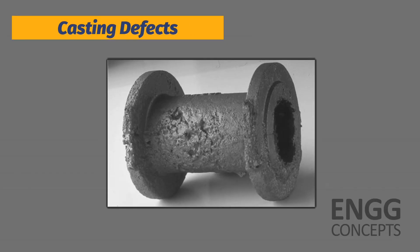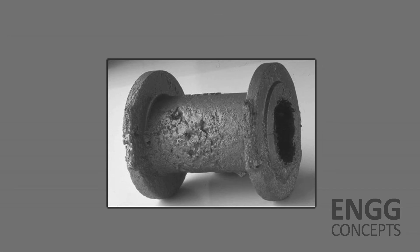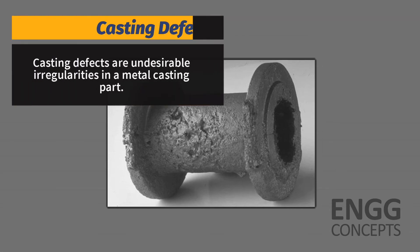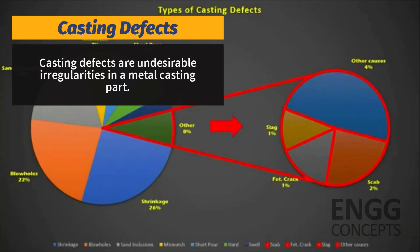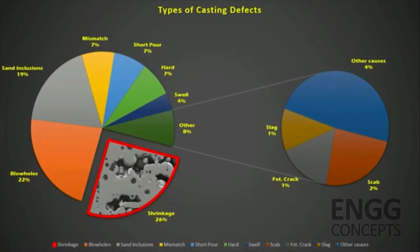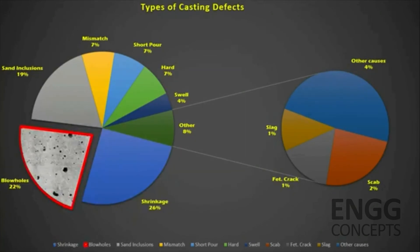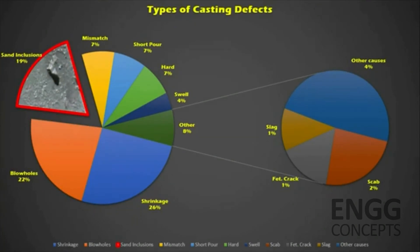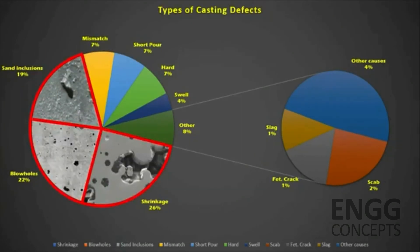Casting defects are another disadvantage. If you want to know about the different types of casting defects and their remedies, a video has been made on that — follow the video link in the description. Casting defects are undesired irregularities in metal castings. It is not possible to completely eliminate casting defects, but we can try to minimize them. Some common casting defects include gas porosity, shrinkage defects, mold material defects, pouring metal defects, metallurgical defects, and casting shape defects.